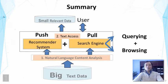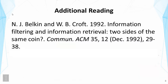To summarize this lecture, we've talked about the two high-level strategies for text access: push and pull. Push tends to be supported by a recommender system and pull tends to be supported by a search engine. Of course, in a sophisticated intelligent information system, we should combine the two. In the pull mode, we can further distinguish querying and browsing, and we generally want to combine both ways to help users. If you want to know more about the relationship between pull and push, you can read this article, which gives an excellent discussion of the relationship between information filtering and information retrieval. Here, information filtering is similar to information recommendation or the push mode of information access.